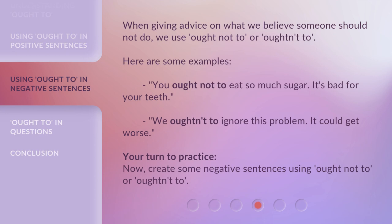When giving advice on what we believe someone should not do, we use ought not to or oughtn't to. Here are some examples: 'You ought not to eat so much sugar — it's bad for your teeth.' 'We oughtn't to ignore this problem — it could get worse.' Your turn to practice. Now create some negative sentences using ought not to or oughtn't to.